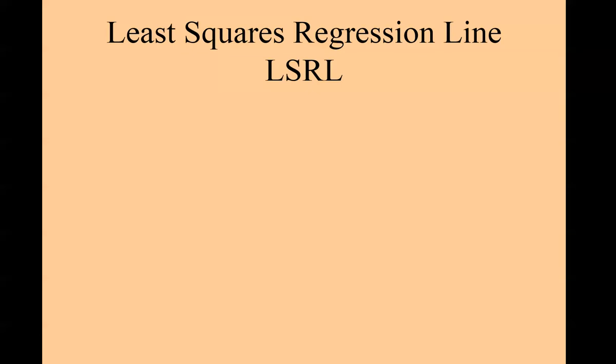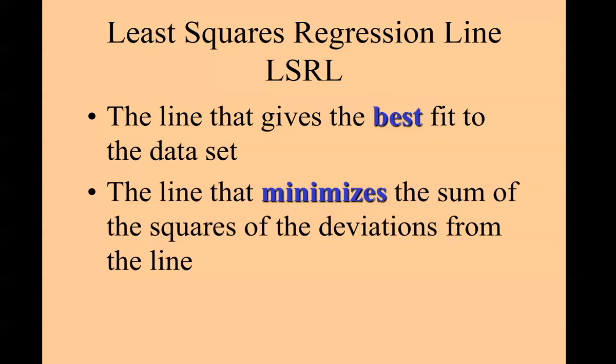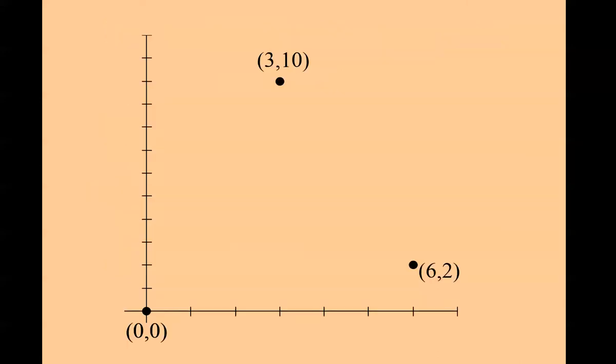LSRL formally stands for the phrase least squares regression line. This is the line that gives the best fit to the data set. In other words, it's the one that does the best job predicting Y from X. It's the line that minimizes the sum of the squares of the deviations from the line.